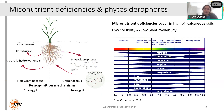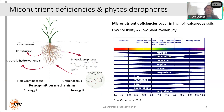These micronutrient deficiencies especially occur in high-pH calcareous soils, because micronutrient solubility in these soils is really low. When solubility is low, plant availability is also low. So while in terms of total amounts, enough micronutrients might be present, they are simply not plant available. These high-pH soils make up about a third of the world's arable soils, so quite some areas are affected.